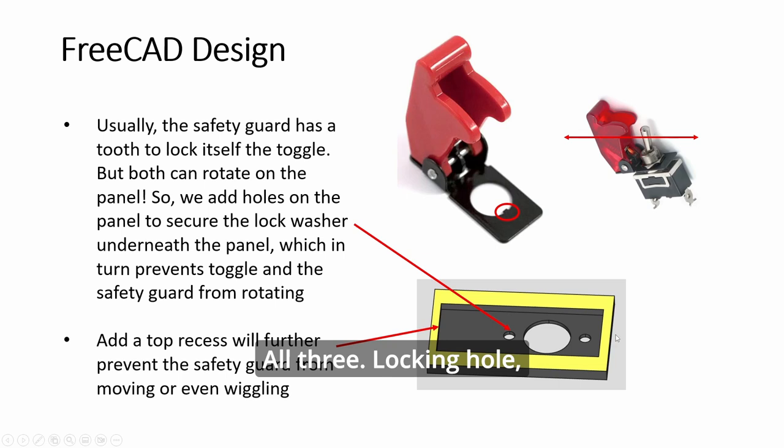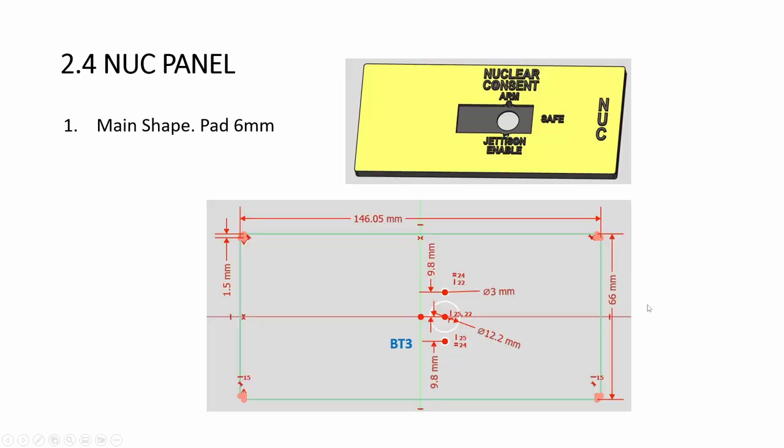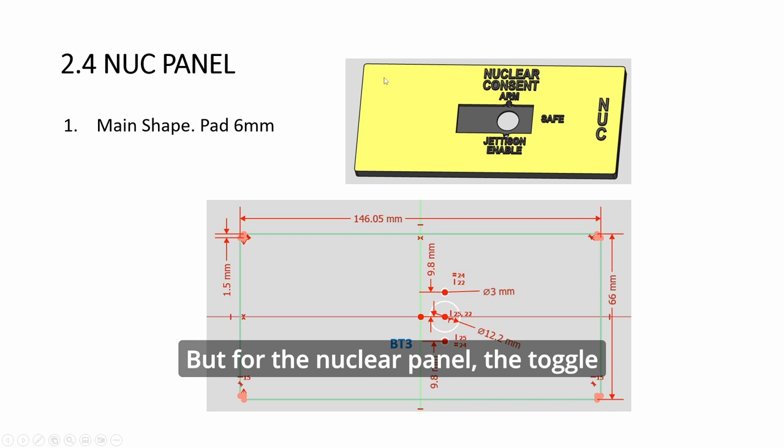All three, locking hole, the tooth and the top recess. But for the nuclear panel, this toggle switch doesn't go this way. It actually goes vertically. Okay, up down like this.